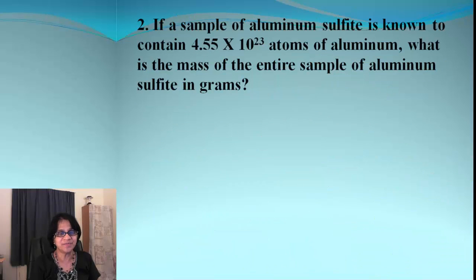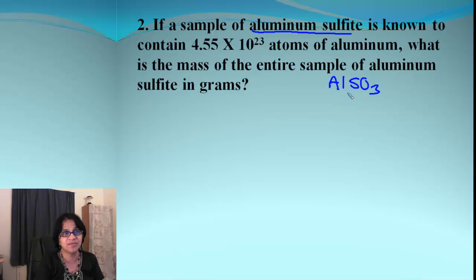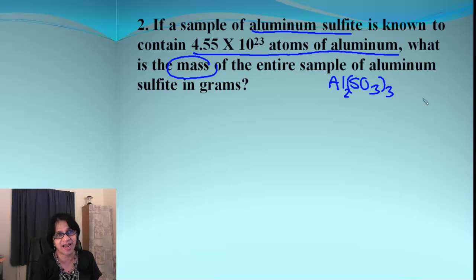In this one, we have a sample of aluminum sulfide. Aluminum sulfide is Al2SO3. So it will be AL2 and SO3 will be 3. What we have is atoms of aluminum are given here. And from there, we need to go to the mass or grams. Now, again, keep in mind, this is a molecule. So, in one molecule of aluminum sulfide, how many aluminum atoms we have? We get two atoms of aluminum.